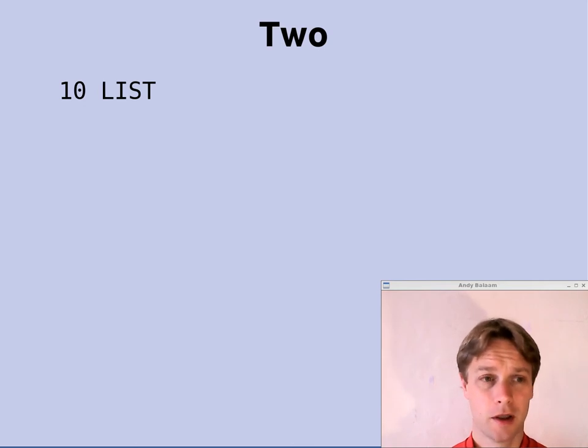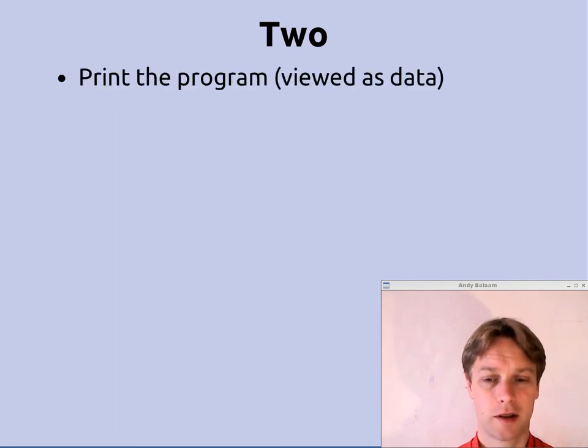This program is a quine in ZX Spectrum Basic from 1984 or 1982. This program uses the list command which prints out the whole program. So I could express that as print the program viewing it as data. Now, a quine like this is normally seen as a bit of a cheat. There's a similar way you can do it where you write a program which reads its own source code off disk and prints it out. And that's considered a bit dull.